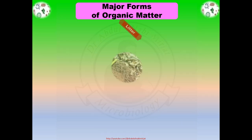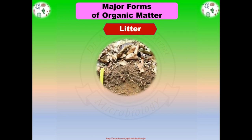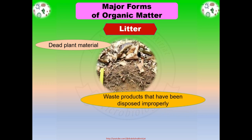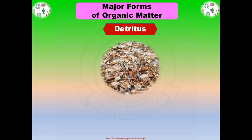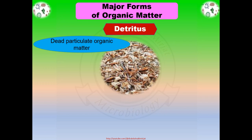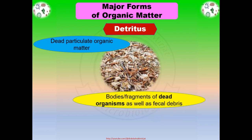Let's first discuss about Litter. Litter is one of the organic matter forms which shows dead plant material such as leaves, bark, and twigs that have fallen to the ground. Litter also shows the waste products that have been disposed of improperly. Detritus shows particularly dead particulate organic matter — bodies or fragments of dead organisms as well as fecal debris, meaning waste or debris of any kind of organic matter.